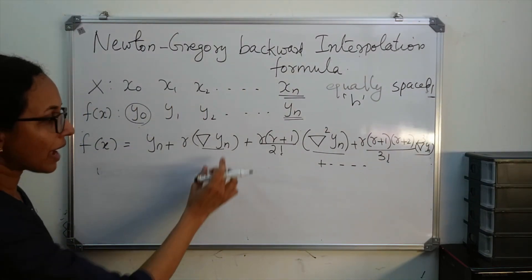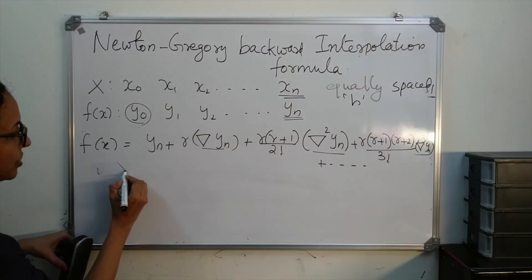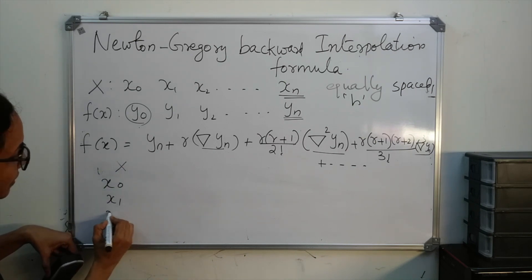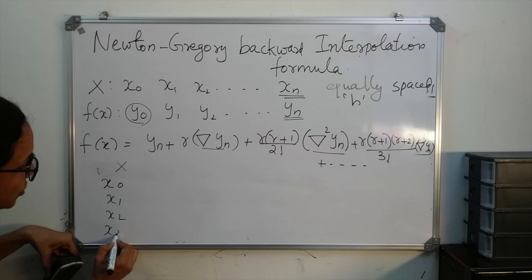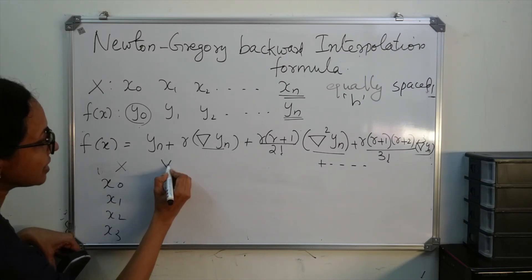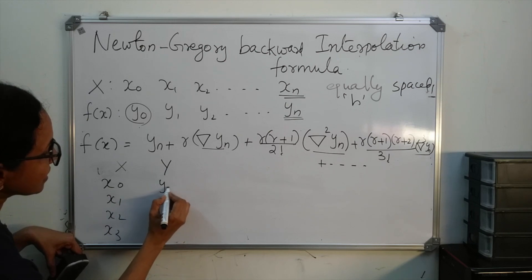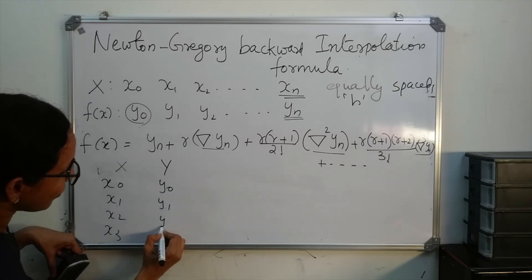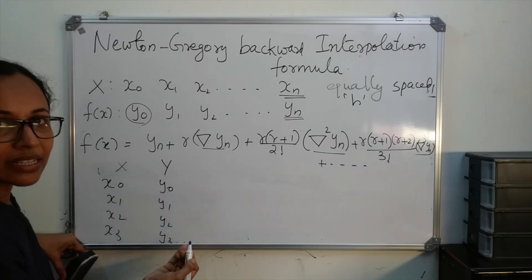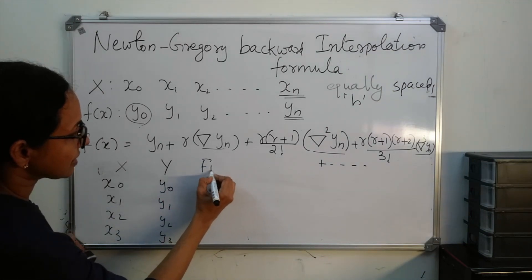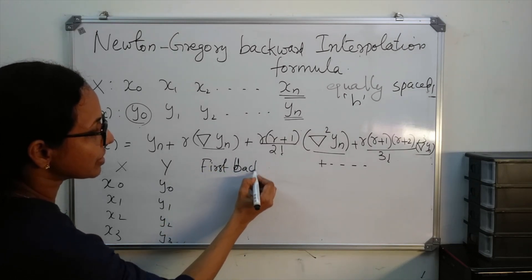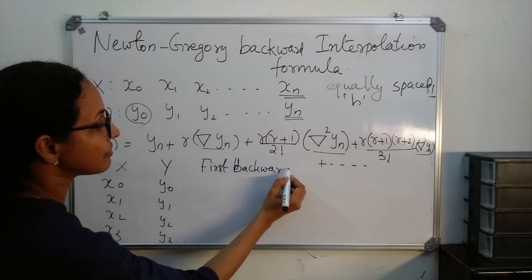Now I will explain backward differences. Consider x values x naught, x1, x2, x3 — suppose only 4 values — and corresponding y values y naught, y1, y2, y3. The meaning of difference is the same: second term minus first term. Only the notation is different.